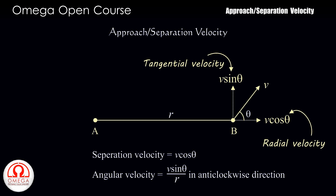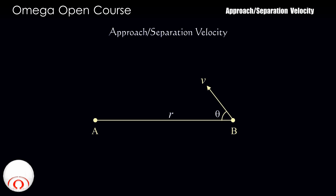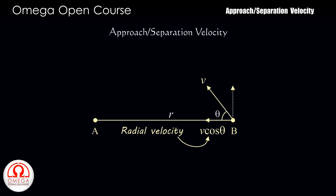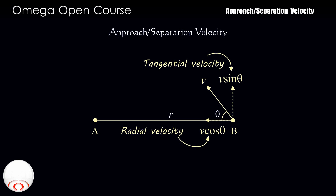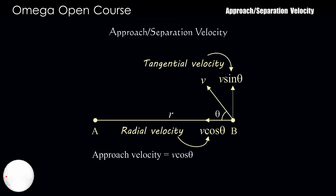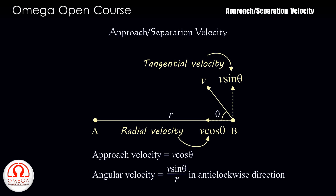Now suppose the direction of B is reversed as shown. The radial component in this case is V cos theta and the tangential component is V sin theta. As you can see, the separation between the two particles will not increase — it will decrease. So the radial component here is the approach velocity. Thus the approach velocity of B is V cos theta, and the angular velocity is V sin theta divided by R in the anti-clockwise direction.